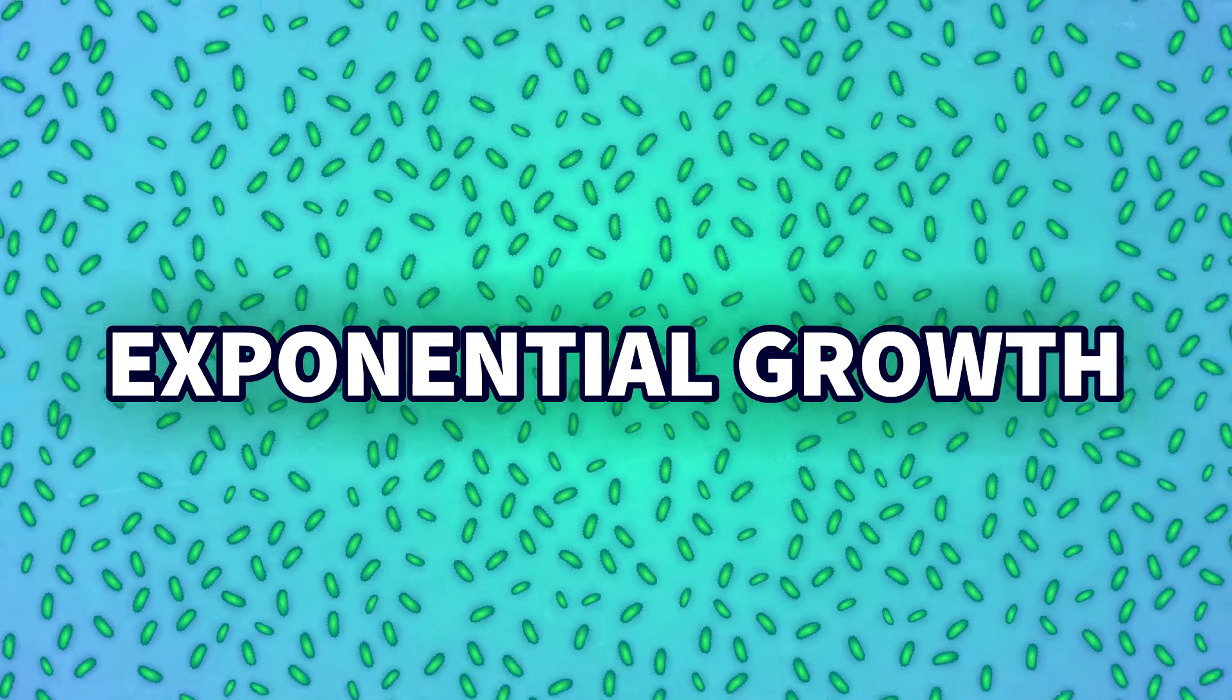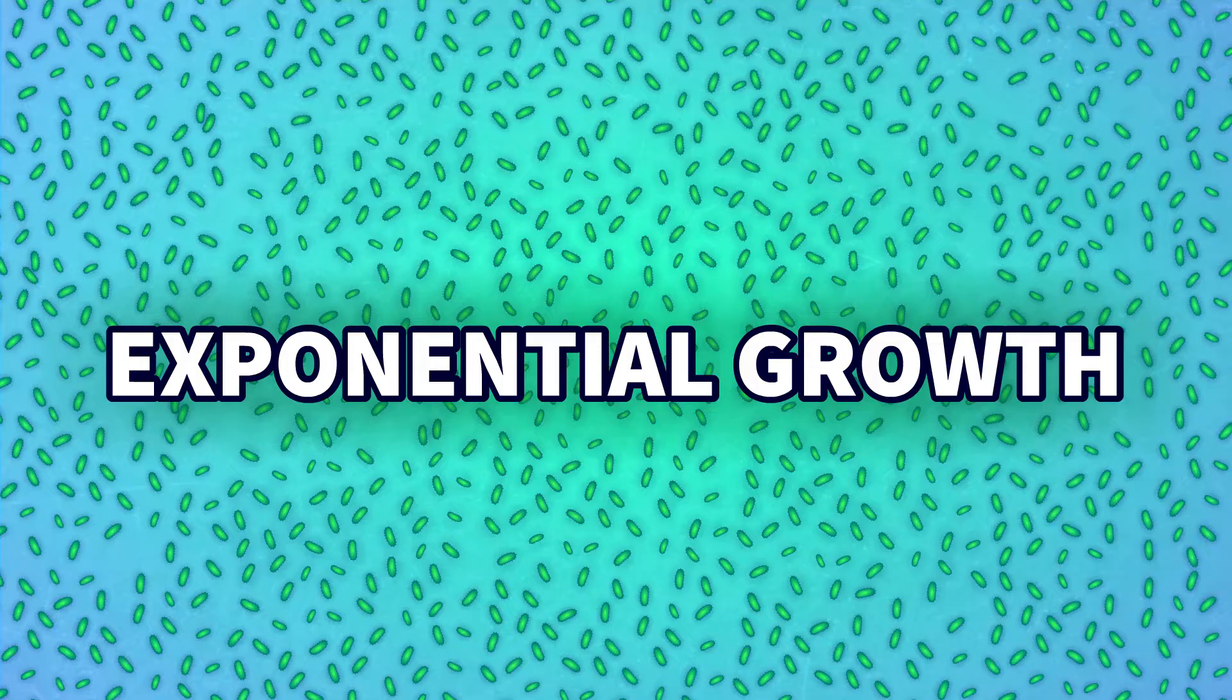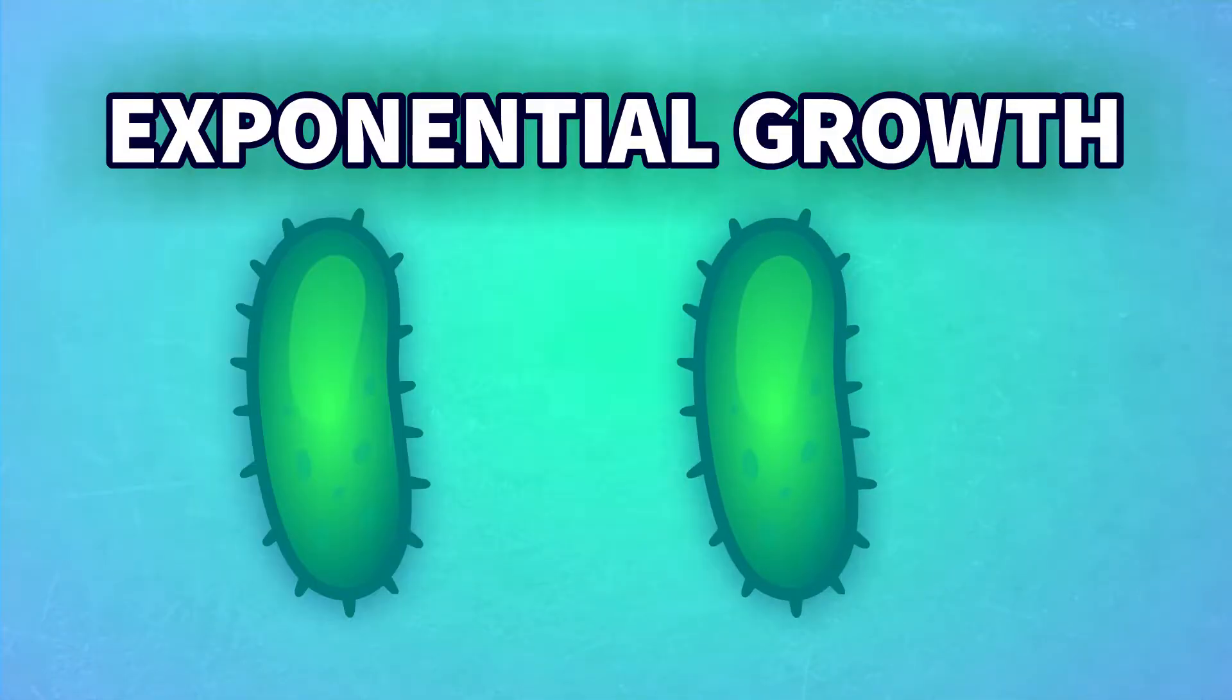Exponential means their population doubles in size every time that they divide. One splits into two, two become four, four become eight, and so on.